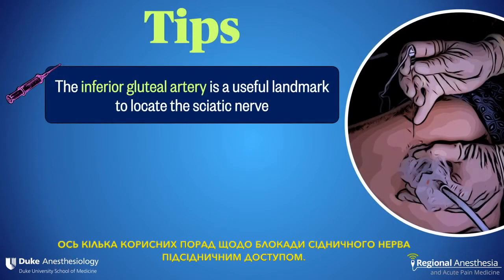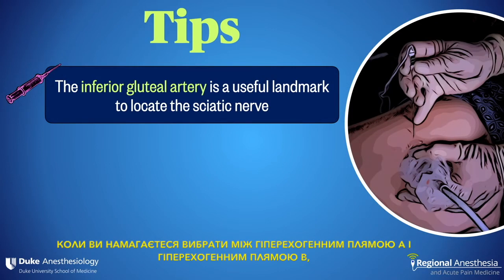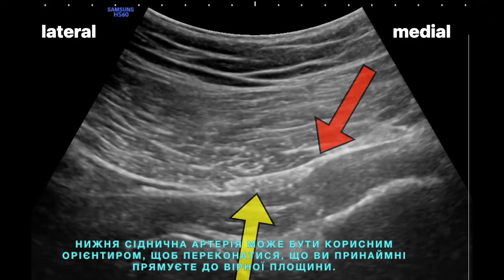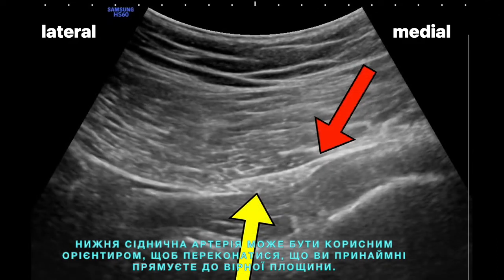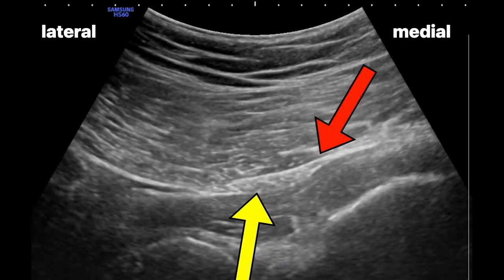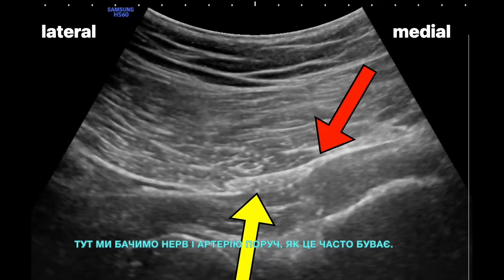Here are some tips for the subgluteal sciatic nerve block. First, it's great when everything looks amazing on the screen, but that's not going to happen every time. When you're trying to decide between hyperechoic smudge A and hyperechoic smudge B, the inferior gluteal artery can be a useful landmark to ensure that you're at least aiming for the right plane. Here we see the nerve and the artery side by side, as is often the case.